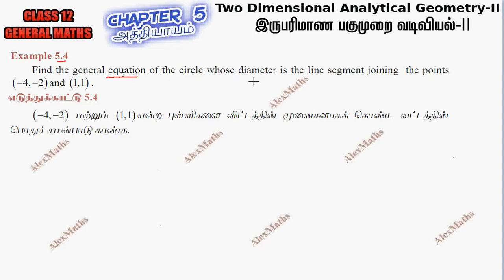Find the general equation of the circle whose diameter is a line segment joining the points. Eventually, 2 points go to the point.